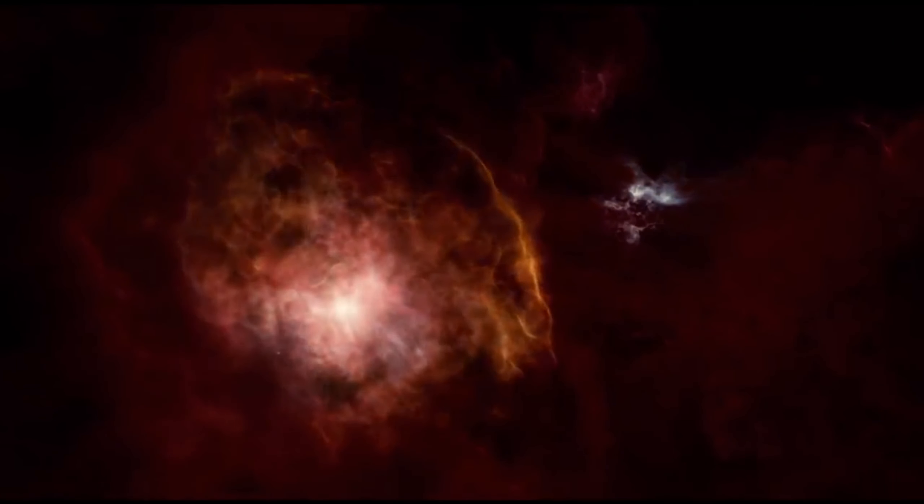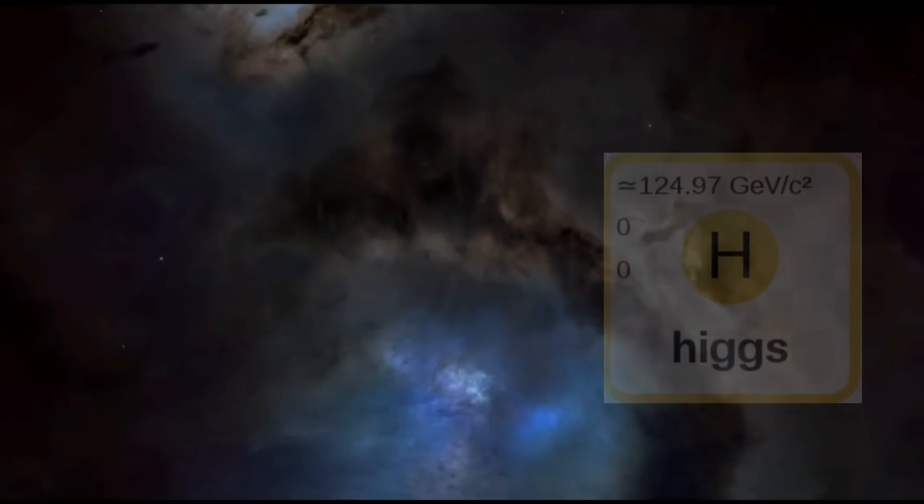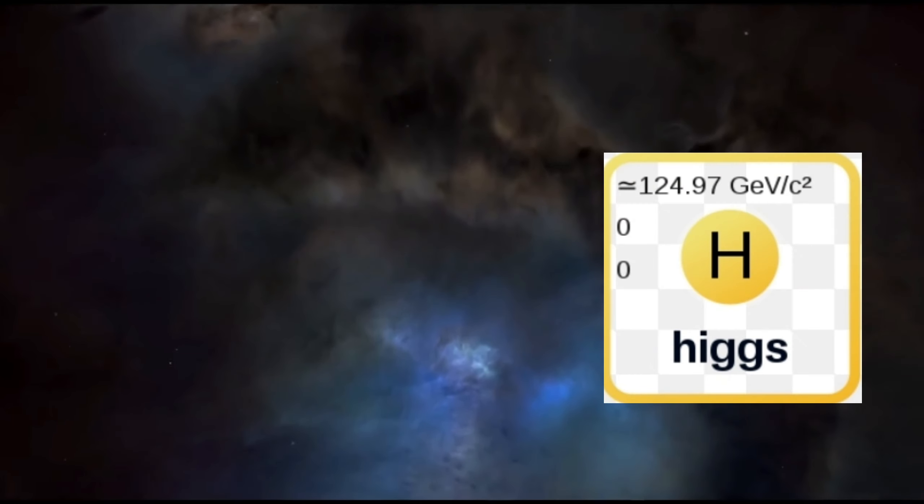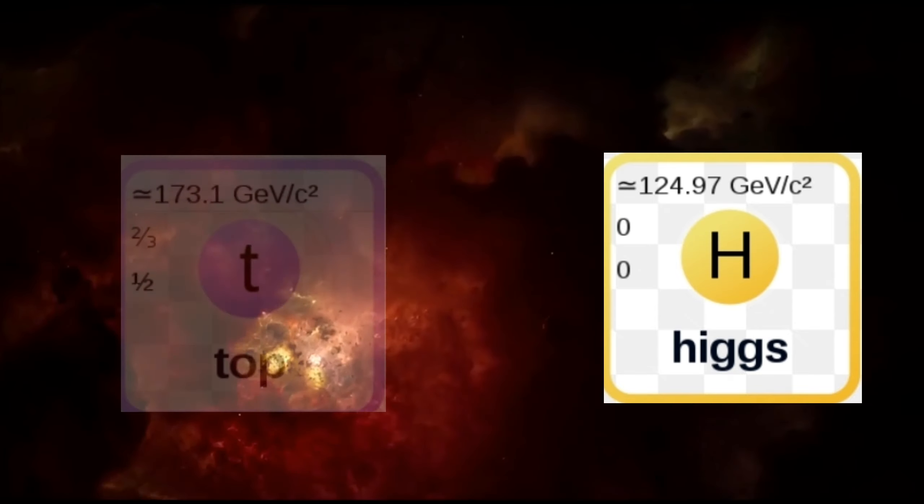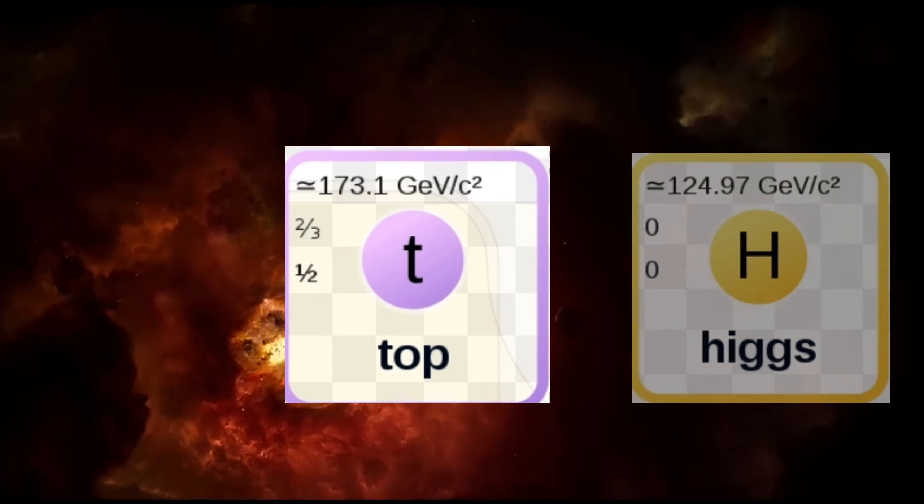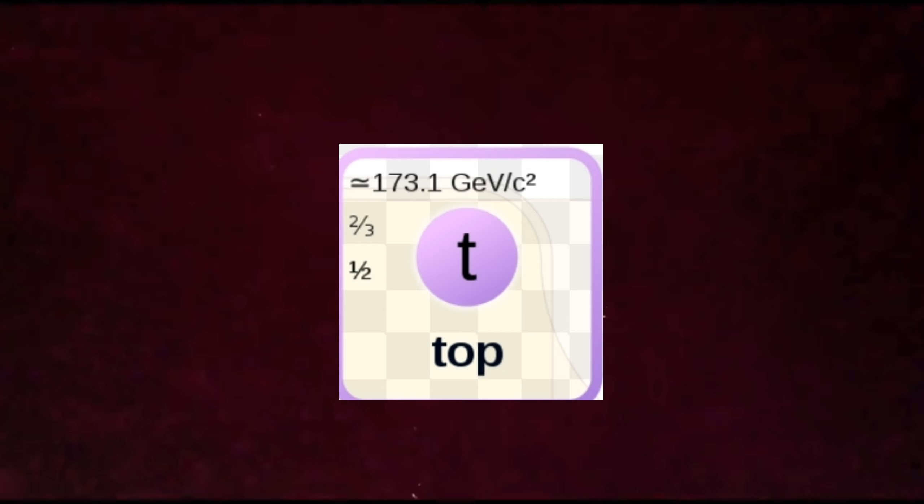However, if the Higgs boson is the creator of the mass of the particle, then why does it not have such a massive mass as the top quark? Speaking of the top quark, how does this particle move in the universe with such a heavy mass?